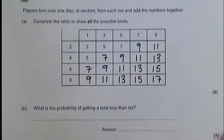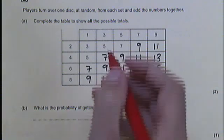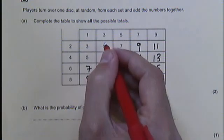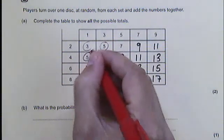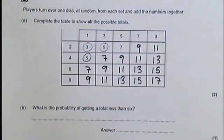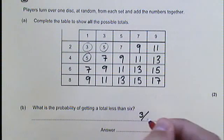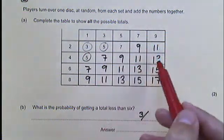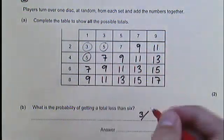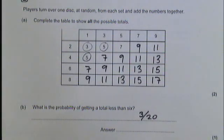Part B says: what's the probability of getting a total less than 6? Here are the ones which are less than 6 — that is 3 different results out of, if you count up all the different possible results, 20 of them. So the probability is 3 out of 20.